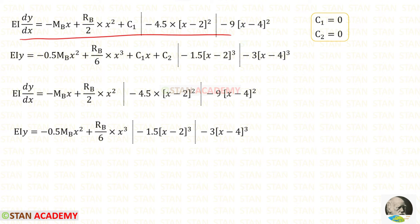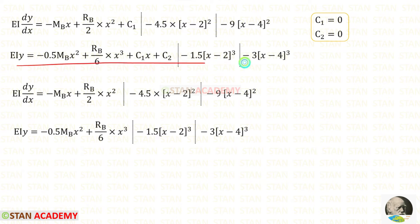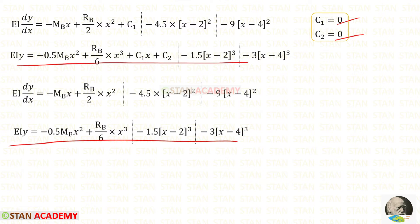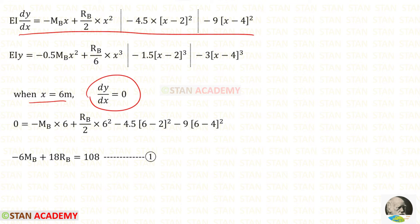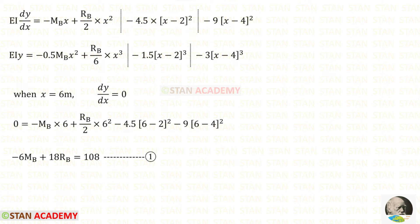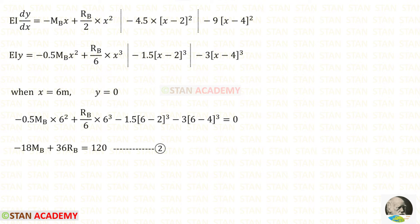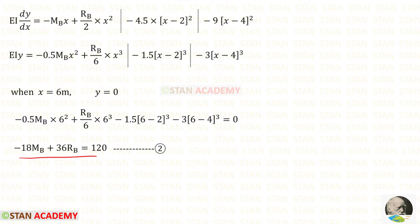In the slope equation, let us apply the values of C1 and C2. When we do that, we get this equation. In the deflection equation also, let us apply the values of C1 and C2 to get this equation. We know that when x=6 m, dy/dx will be 0. Applying this to the slope equation and considering both applicable terms, we get equation number 1. Also, when x=6 m, y will be 0. Applying this to the deflection equation, we get equation number 2.